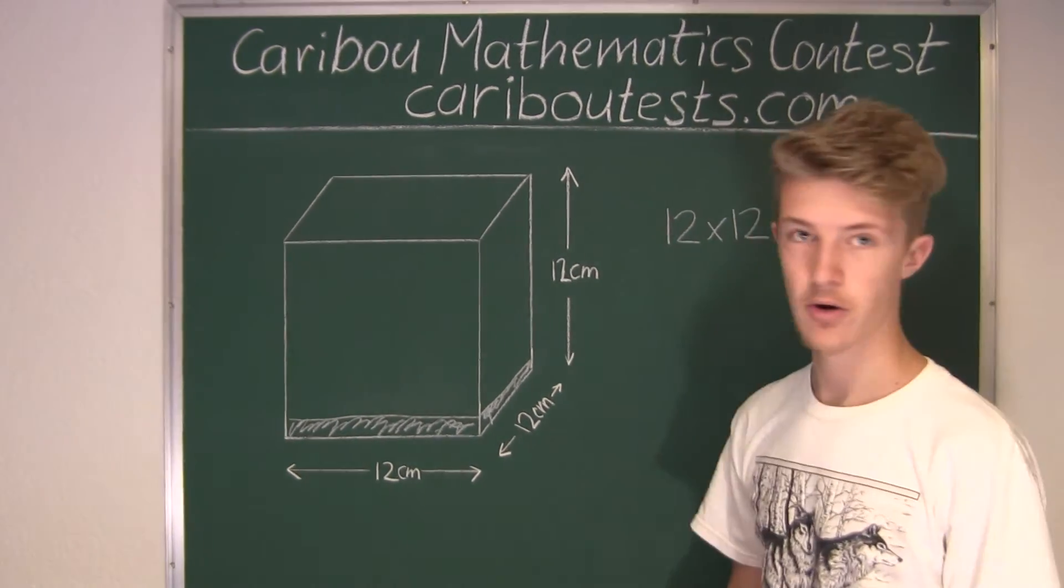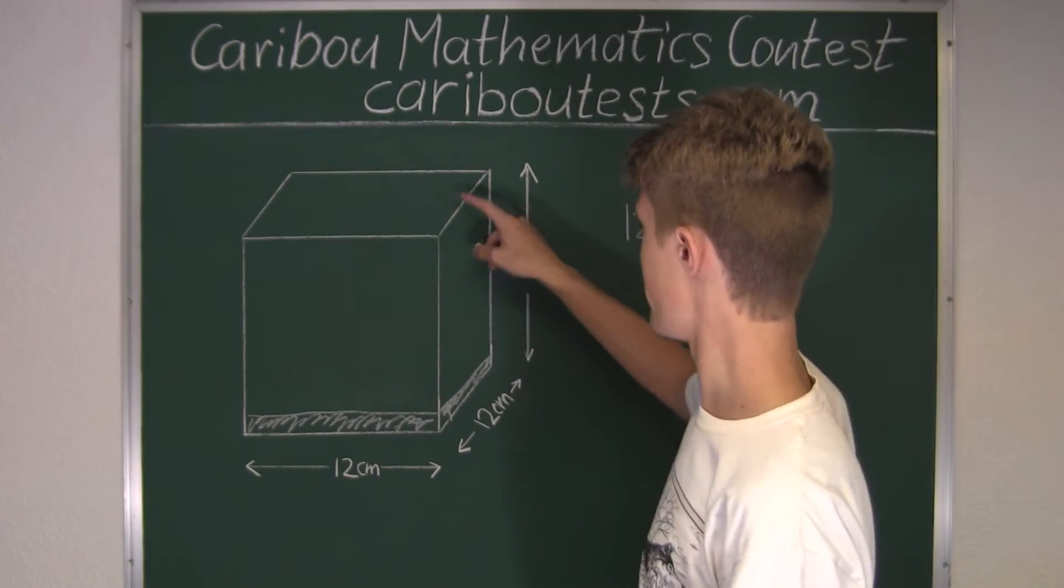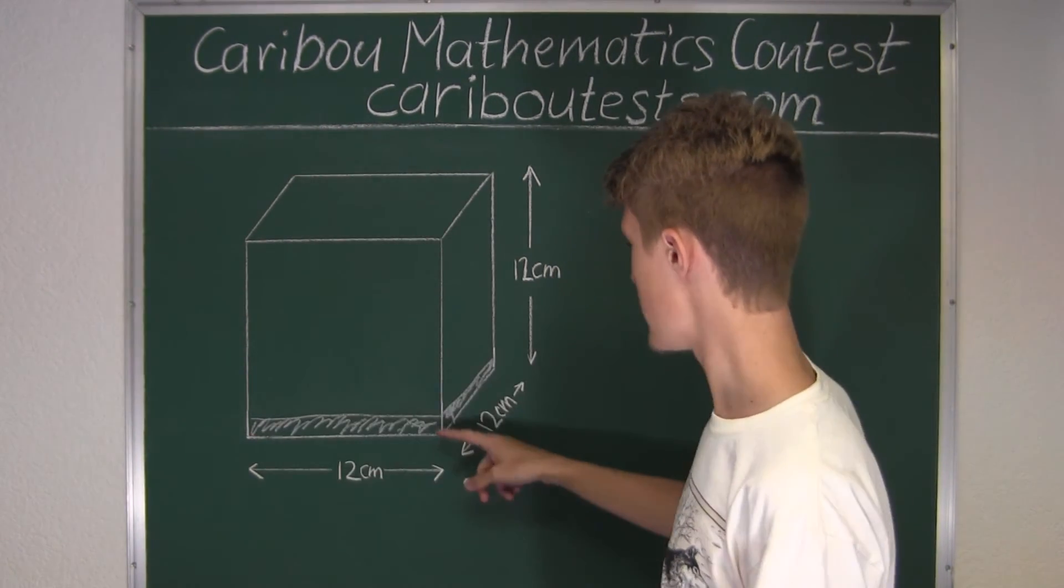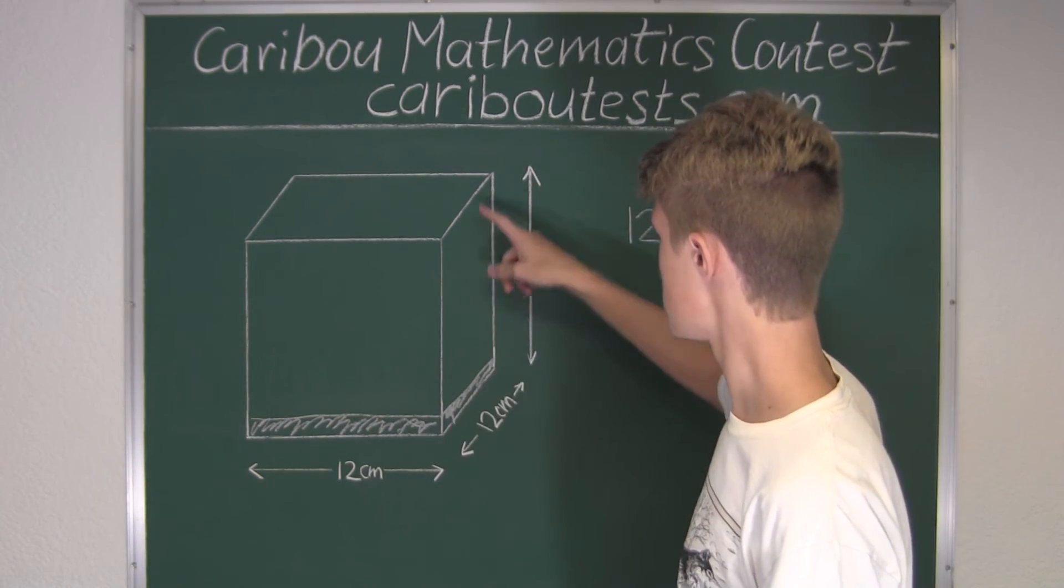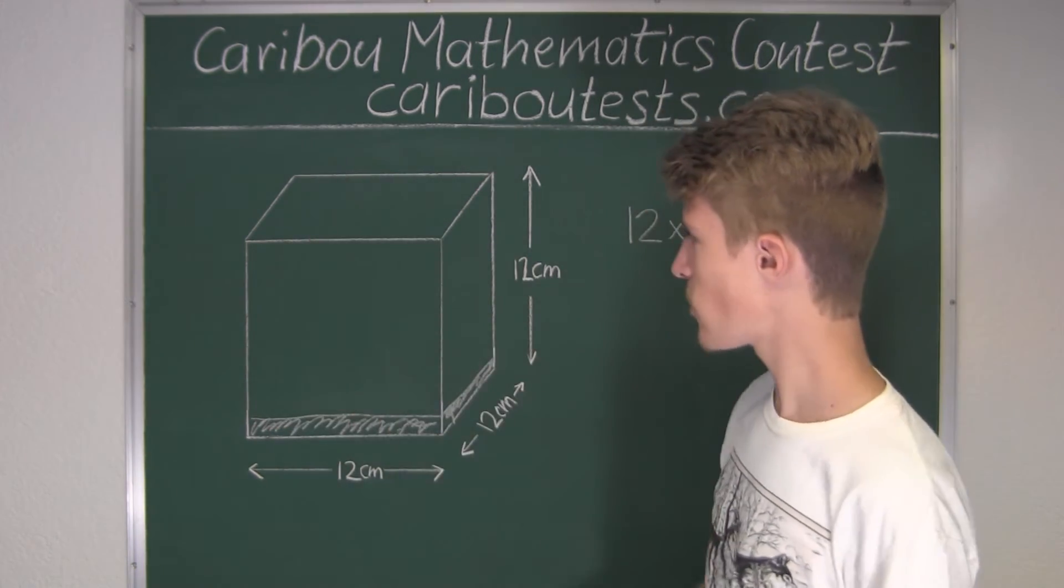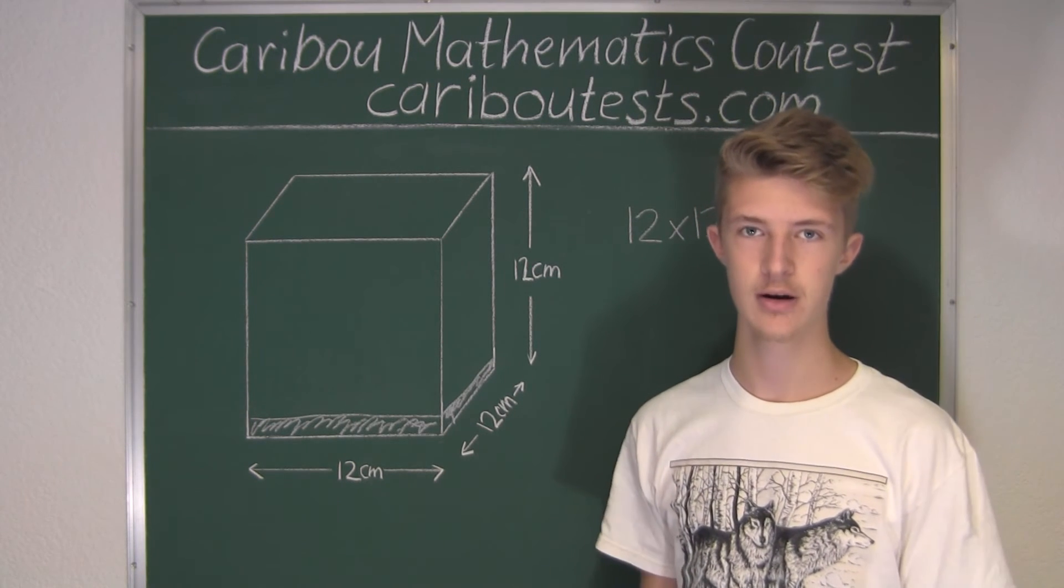Okay, so for every cube, it has 4 edges for the top face, then it has 4 edges for the bottom face or base, and finally it has 4 side edges. So in total, it has 4 plus 4 plus 4, which is 3 times 4, is 12.